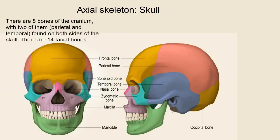Now onto the skull: there are eight bones of the cranium, which we previewed — the parietal and temporal on the sides — and 14 facial bones. Here we have much of what I just talked about, and I like the colorized view because it separates them nicely.